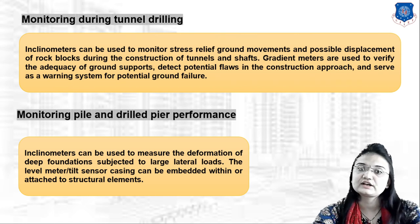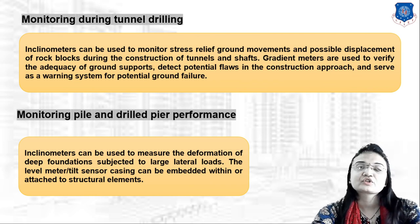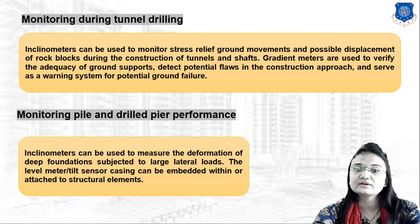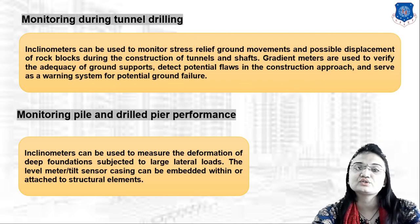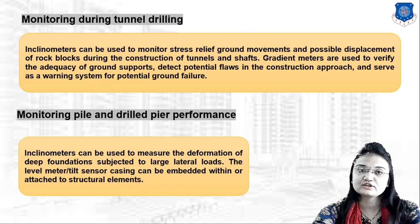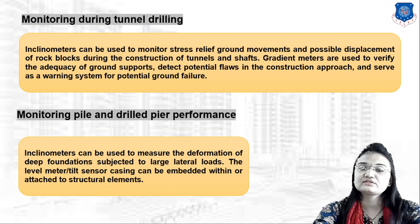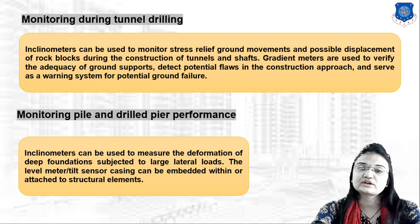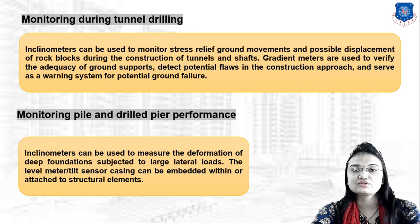In summary, in this lecture we learned about what is an inclinometer — a sensor used to measure tilt and slope movement with respect to gravity. There are two types: the manual and digital (portable) inclinometer, which does not give instant information, and the in-place inclinometer, which provides instant information regarding slope movement. We also studied the working principle of the inclinometer and its various applications. Thank you for watching this video.